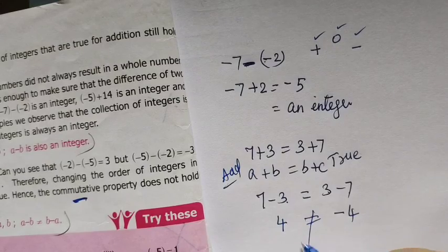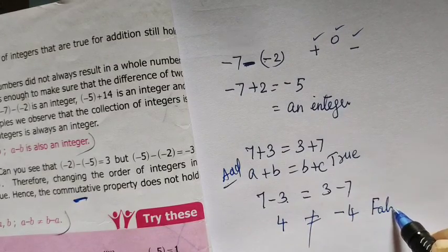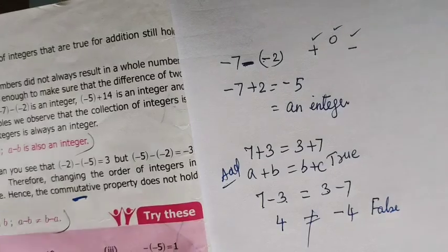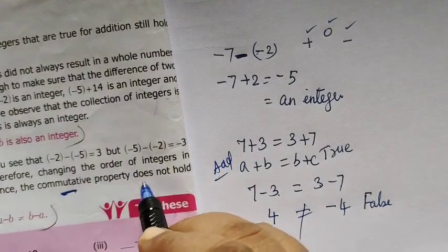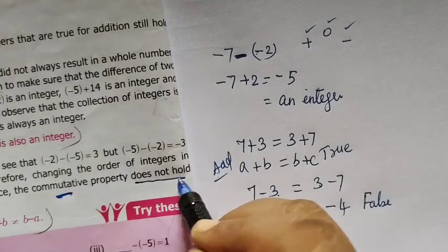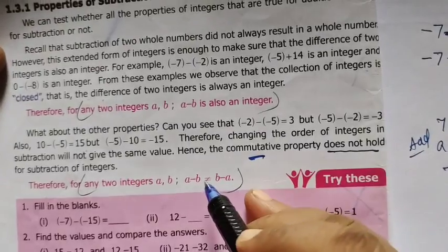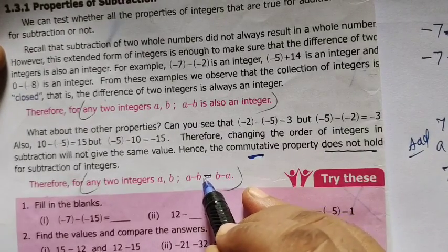Commutative property is not true. Does not hold. That is why we are going to say does not hold. This is also not there. This is only one mark.